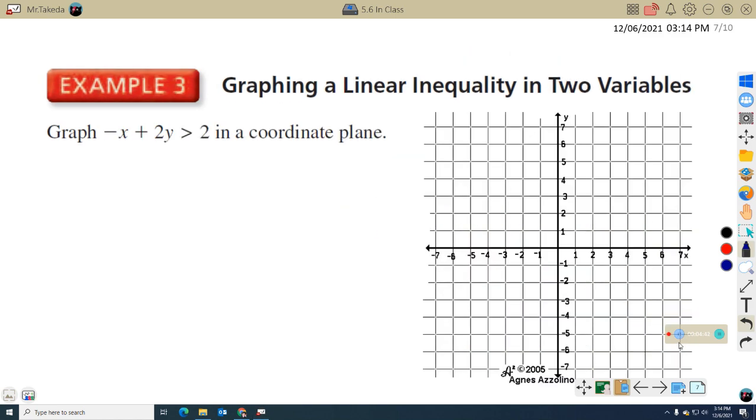And this is graphing a linear inequality in two variables. In this case here, negative x plus 2y is greater than 2. Let me rewrite it here. We want to solve for y like we were solving for a linear equation, so we can graph using slope-intercept form. We kind of pretend that the inequality sign is like an equal sign for our boundary.